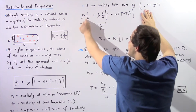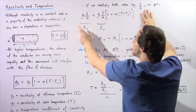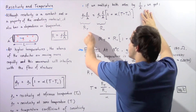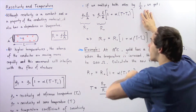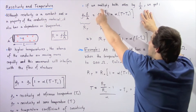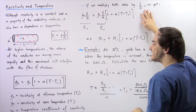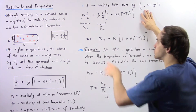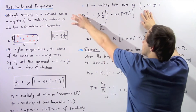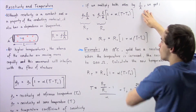So ρ_T multiplied by L divided by A is our resistance at that particular temperature T, while ρ₀ multiplied by L divided by A is our resistance at our reference temperature R₀. So we basically rewrite this equation in the following format.